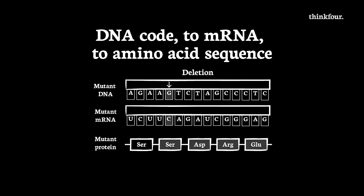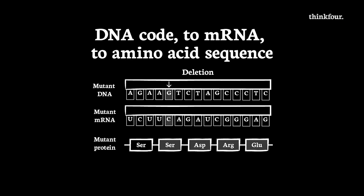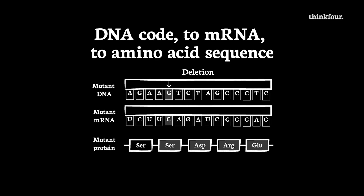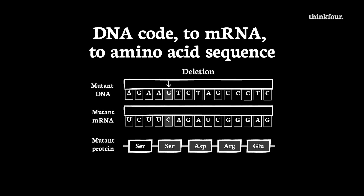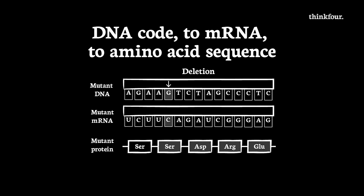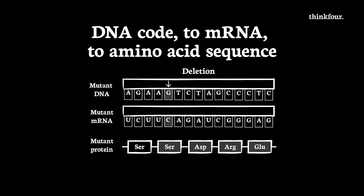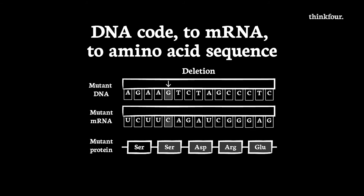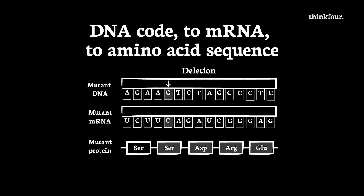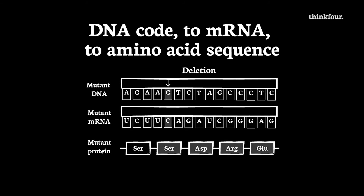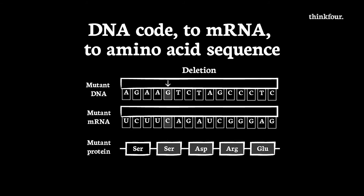Think about the base sequence as a line of 12 people that you know. Now separate them into groups of three, but still have them standing in a line. Take out the person standing at number five — they have been deleted. To keep groups of three, everybody after number four moves up one place. Now all your triplets after the one number five was in, the point of the mutation, have changed. The people in your groups after the first group have all changed.